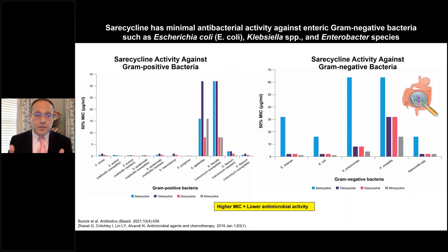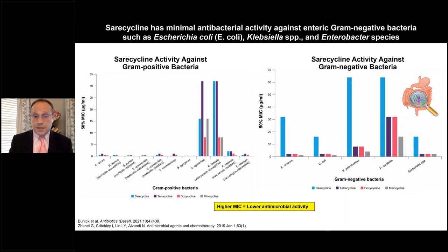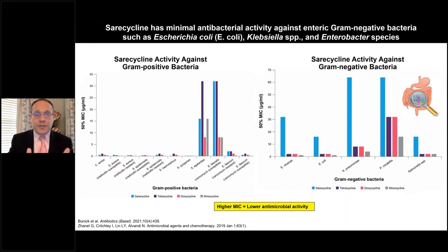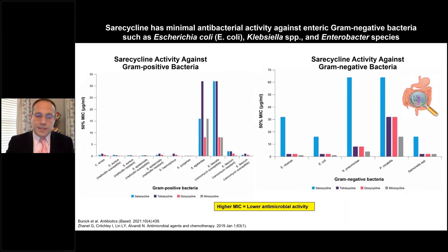There are a couple of recent publications everyone should be aware of. First, a publication in MDPI Antibiotics showed that saracycline, directly compared to minocycline, targeted 79% less of the gut microbiota. Second, a paper just out of the United Kingdom used a colonic model and found that saracycline, compared to doxycycline and minocycline, substantially had lower alteration of the colonic microbiome. The science behind broad versus narrow-spectrum is gaining momentum in the tetracycline space.